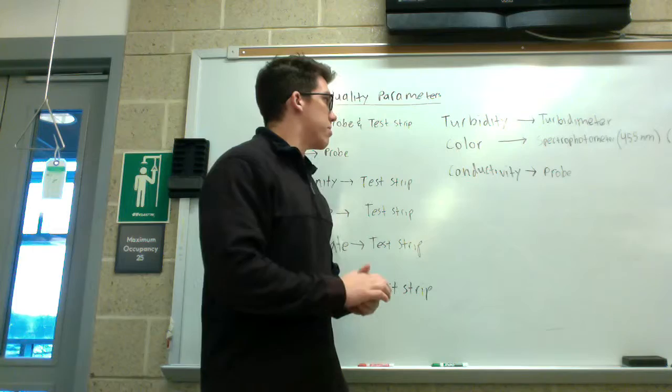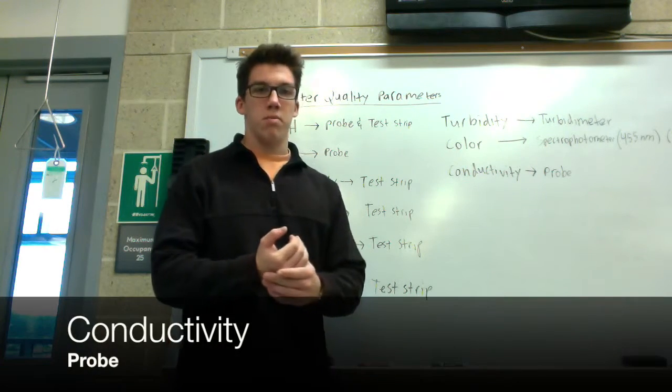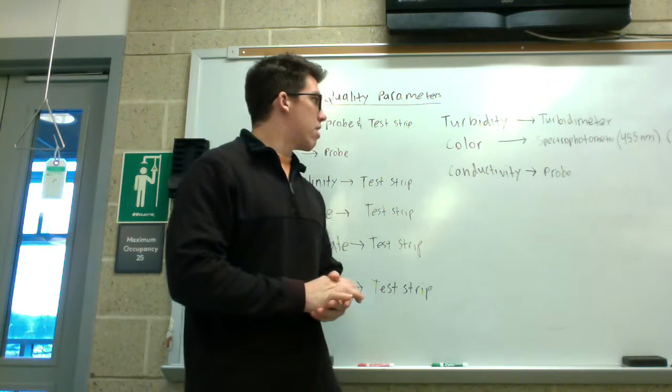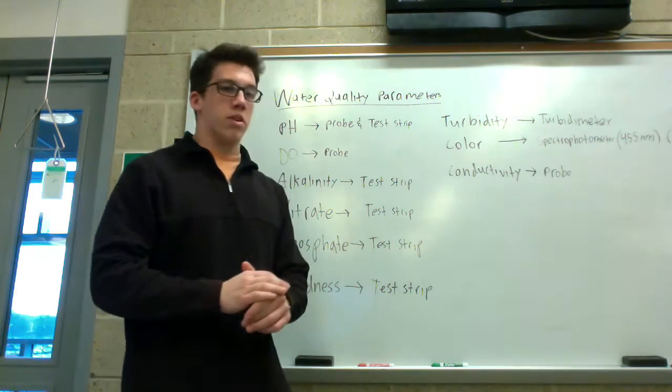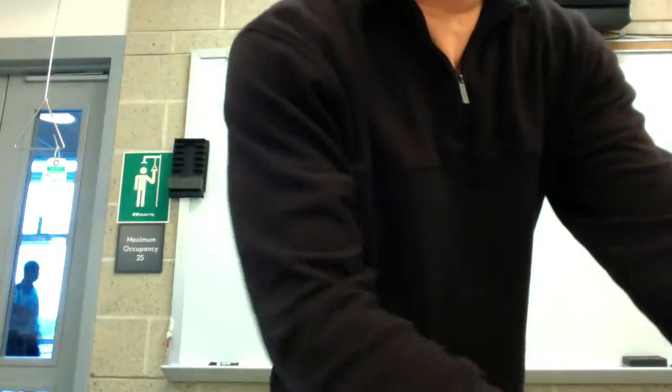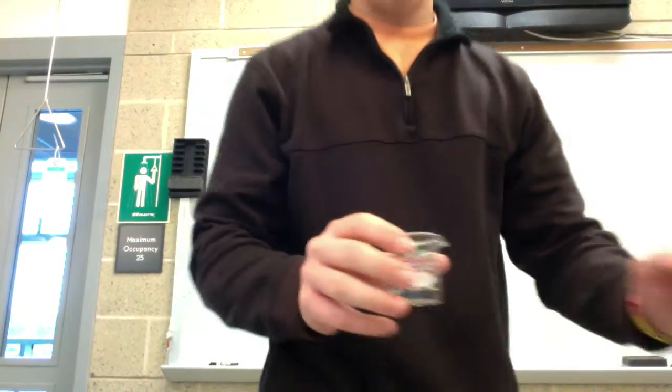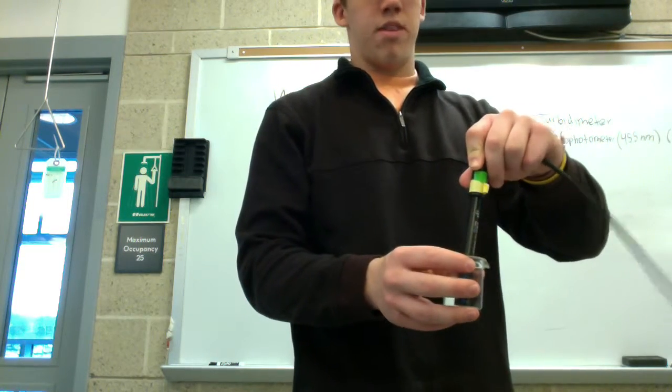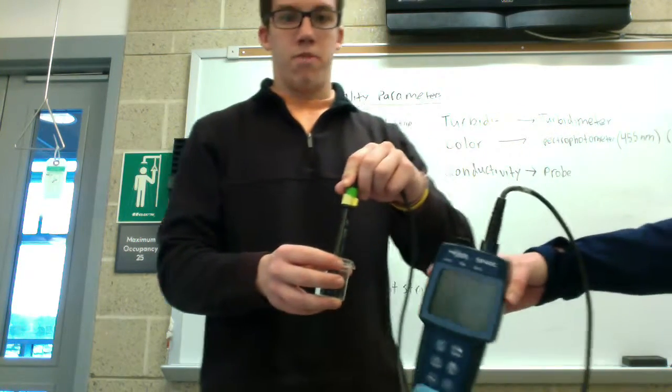The final parameter we're testing for is conductivity. Conductivity is a measure of all the anions and cations present in a water sample. We're going to use a conductivity meter. Take the probe and put it into your water sample. Once it stabilizes, you'll have a conductivity value.